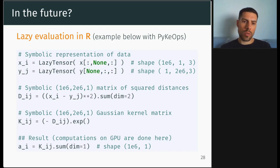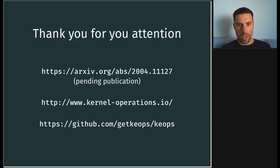So a quick word in the future. We hope to develop lazy evaluation in R, like what we have in PyKeOps in Python. So here you don't need to write a formula. You just write symbolic operations that are not actually computed based on the symbolic representation of the data. And then when you do the reduction, it is actually the moment where the computations are done.